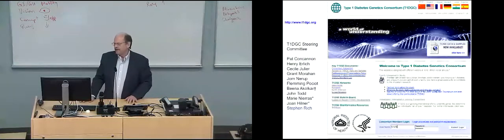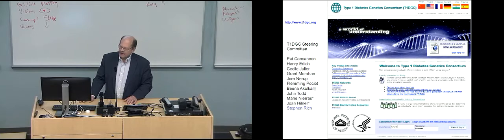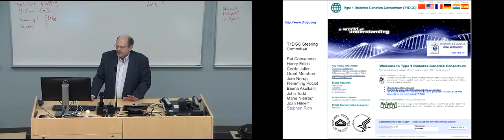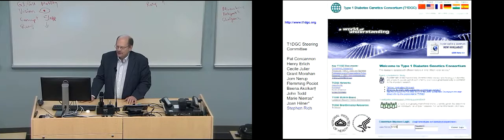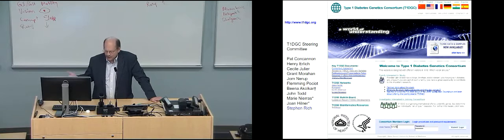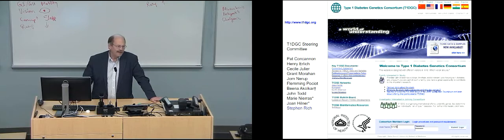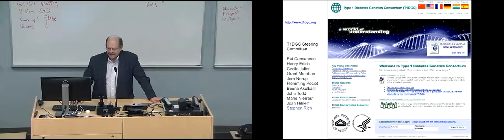A lot of the work that we've been doing is based upon the type 1 diabetes genetics consortium. I led this effort funded through the JDRF and the NIDDK some years ago. It had a steering committee, which was multinational, Pat Concannon, Henry Ehrlich, Cécile Jullier, Grant Morihan, Jorn Nerep, and Fleming-Pasiat being a project officer from NIDDK, including John Todd. Marie Neres was the project officer from JDRF. Joan Hillner was my project leader who went home every day with a headache because she's trying to track all the samples, all the recruitment, deal with all the QC, and I just had to deal with the NIDDK and various other people to try to get more money.